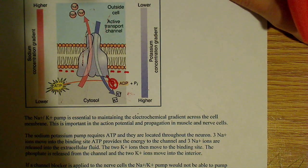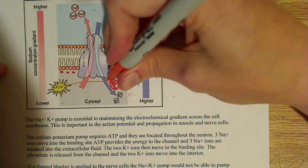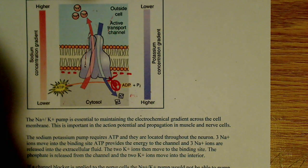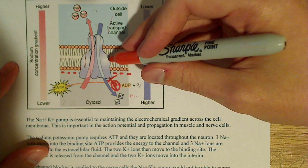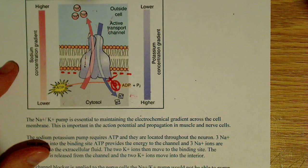And what ends up happening is we lose this phosphate group, so this phosphate group ends up getting cut off. And that induces another conformational change that reverses this ATPase back to its original conformation when it first bound the Na+ ions.